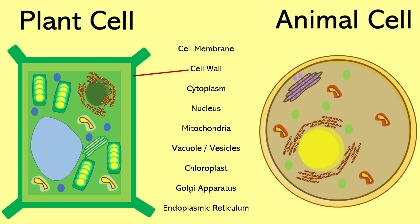The cell wall is mainly made of cellulose, a type of carbohydrate. The cell wall also helps regulate what enters and exits the cell. Inside the cell, there is a jelly-like fluid that fills it up. This is where the cell's activities happen. This is known as the cytoplasm.